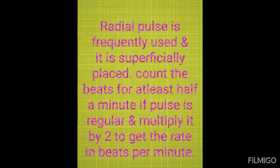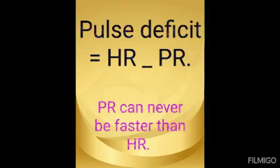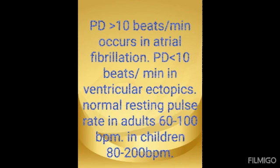If the pulse is irregular, also count the heart rate with a stethoscope for 1 minute and calculate the pulse deficit. Pulse deficit is heart rate minus pulse rate. This is measured using a stethoscope for 1 minute. Pulse rate can never be faster than the heart rate — this is very important.